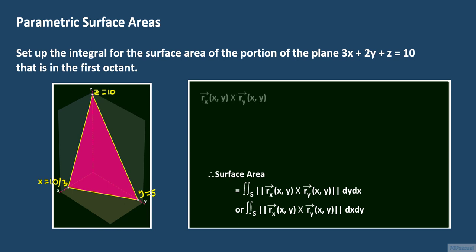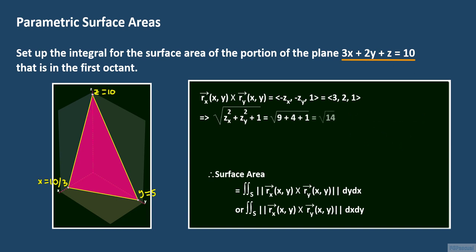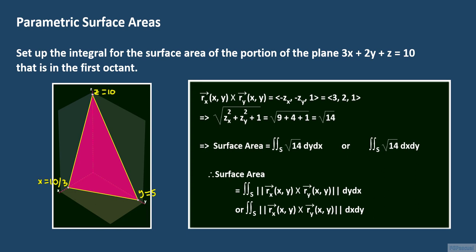The cross product of r sub x and r sub y is the vector (−z sub x, −z sub y, 1). Solving for z in the equation of the plane gives z equals 10 minus 3x minus 2y, so z sub x equals −3 and z sub y equals −2. The magnitude of the cross product is the square root of (z sub x)² plus (z sub y)² plus 1, which equals the square root of 9 plus 4 plus 1, giving the square root of 14.